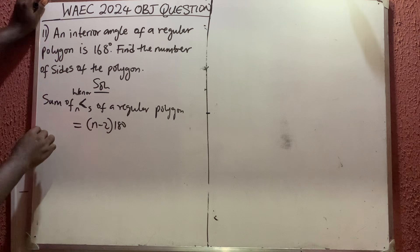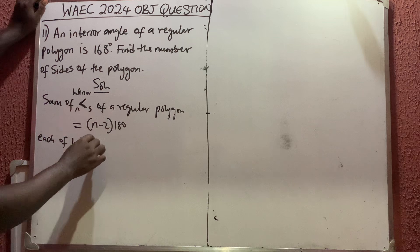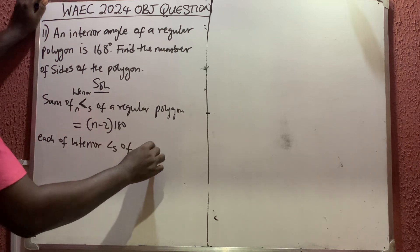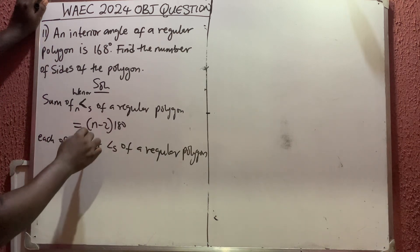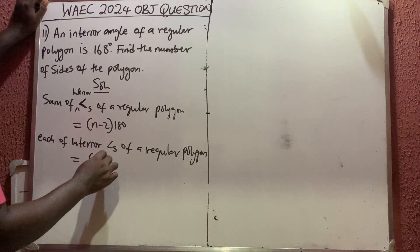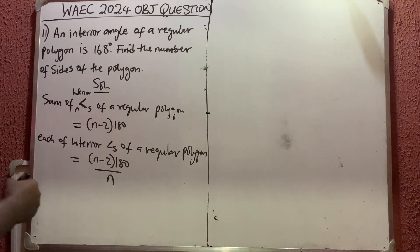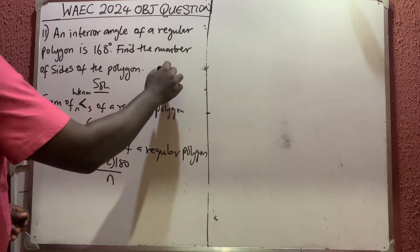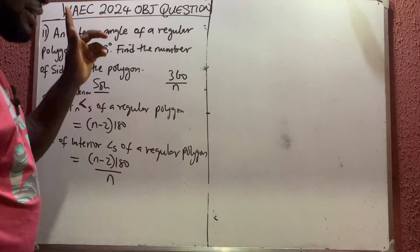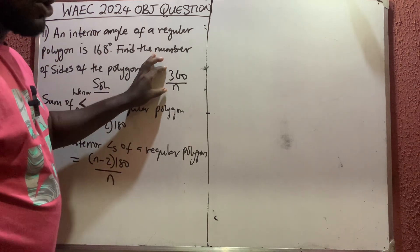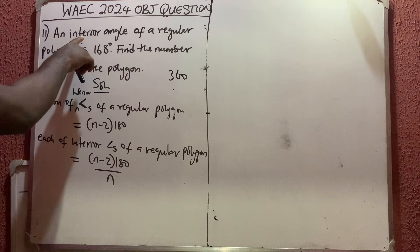But they did not give us the total sum — they gave us each angle individually. So the formula for each interior angle of a regular polygon is (n minus 2) times 180, divided by n. Also note: the sum of exterior angles of a regular polygon is always 360, so each exterior angle is 360 divided by n.